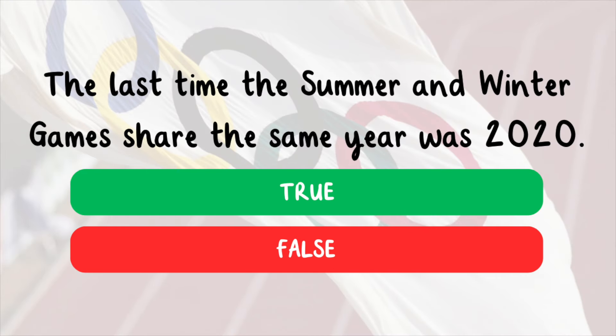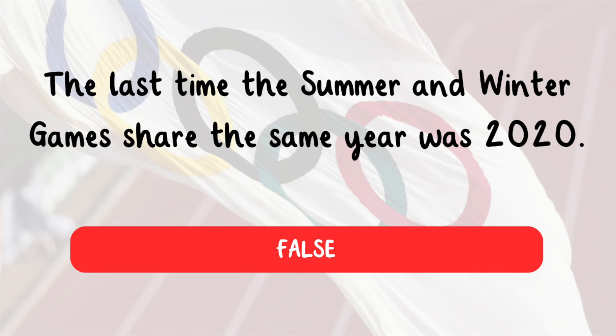True or false? The last time the summer and winter games shared the same year was 2020. This is false. The last year was 1992. Since then, the summer and winter games are staggered every two years.